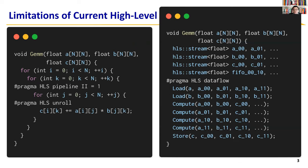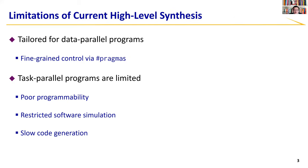Task parallel programs, on the other hand, are not as lucky. If we ever want to implement matrix multiplication as a systolic array, which additionally exposes task parallelism, the code will quickly expand. Worse, we find that task parallel programs have limited HLS support due to poor programmability, restricted software simulation, and slow and monolithic code generation.